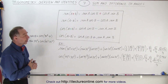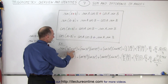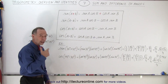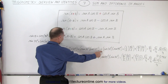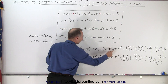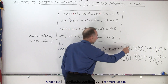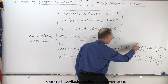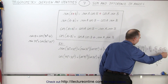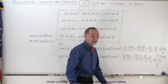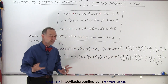As an example, let's find the sine of 30 degrees plus 45 degrees, which adds up to 75 degrees. We take the sine of the first angle times the cosine of the second angle, plus the cosine of the first angle times the sine of the second angle. The sine of 30° is 1/2, cosine of 45° is √2/2, cosine of 30° is √3/2, and sine of 45° is √2/2. Simplifying gives us (√2 + √6) / 4, which is about 0.966 — the same as sin(75°) on a calculator.